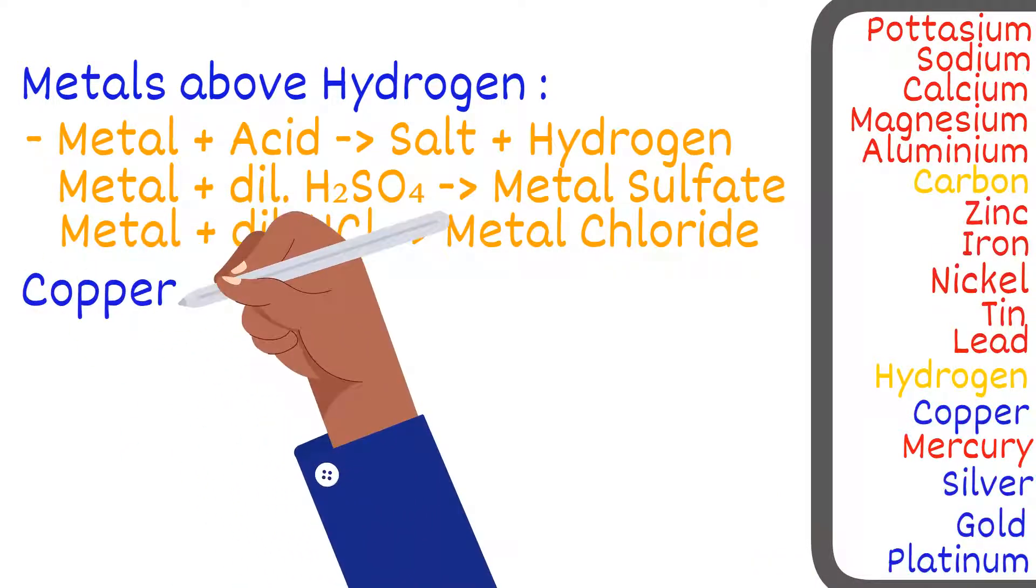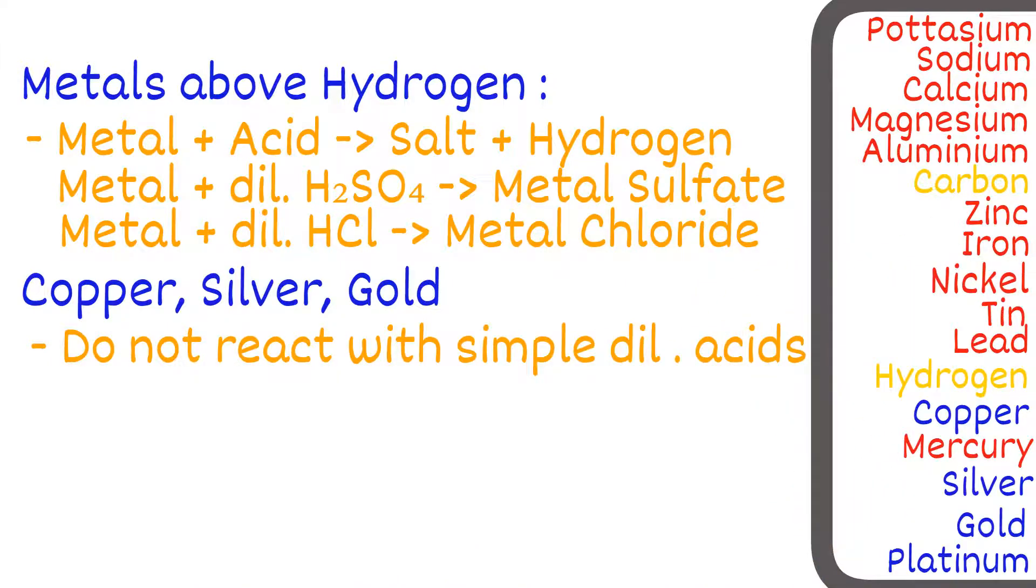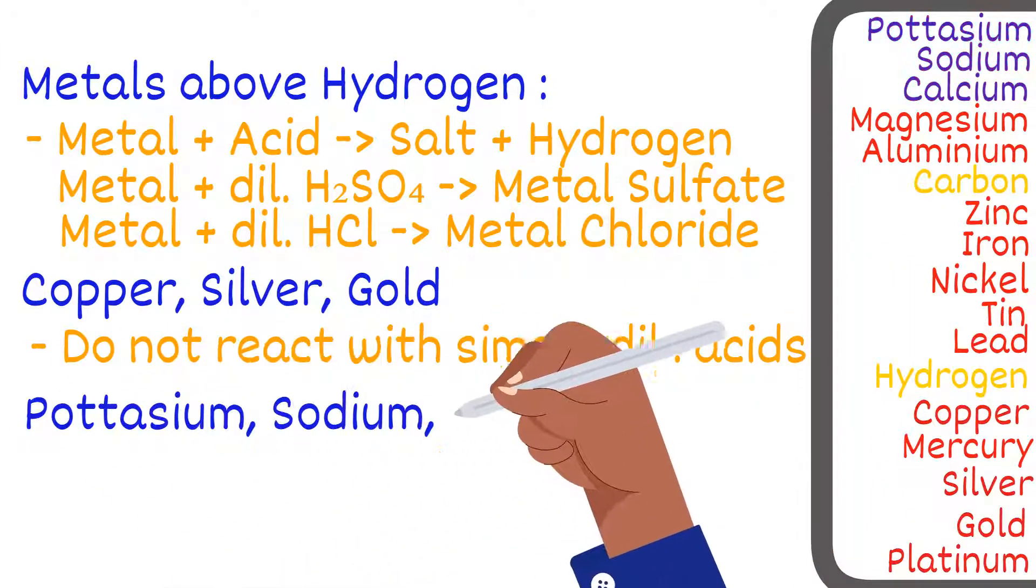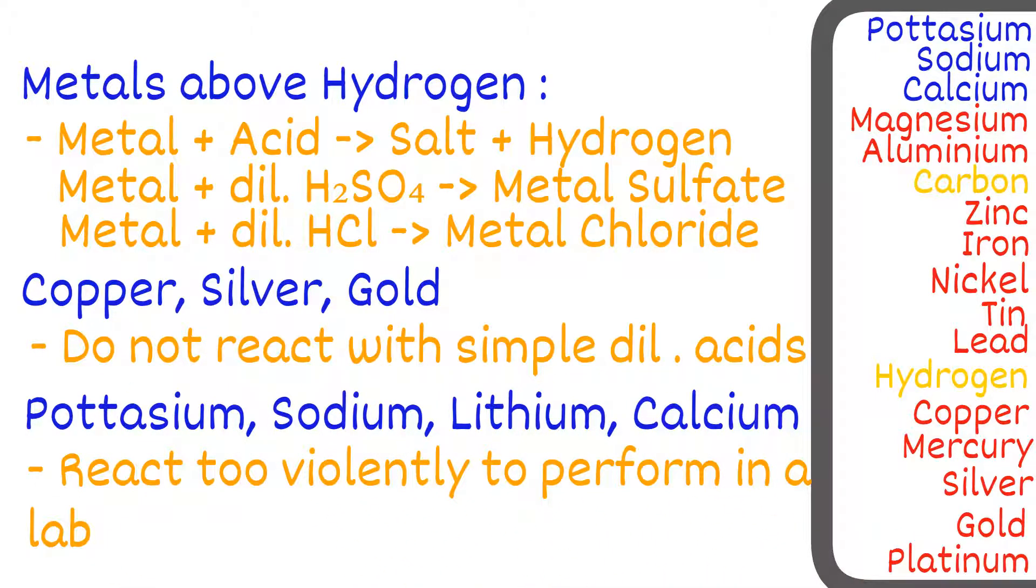Copper, silver, and gold do not react with these types of simple dilute acids. Potassium, sodium, lithium, and calcium react too violently with acids to be carried out in a lab. Magnesium also reacts vigorously with acids as mentioned before.